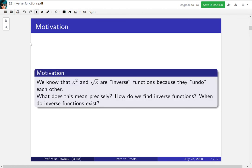Our motivation is that we know that x squared and square root of x are quote inverse functions because they undo each other. If you apply one and then the other, you get back to x. Well, most of the time. There's a slight issue about absolute values, but for the most part they undo each other. So our goal is to figure out what does this mean precisely? How do we find inverse functions? And when do inverse functions even exist?